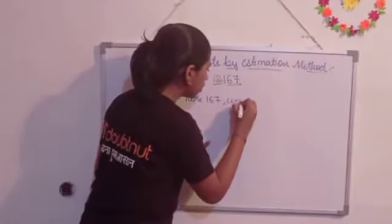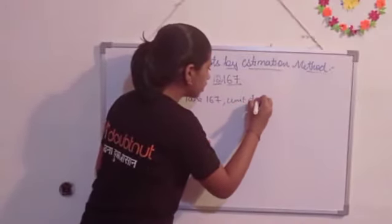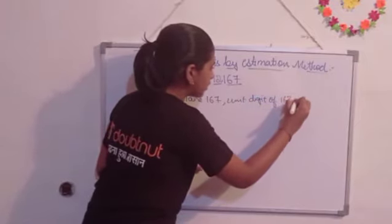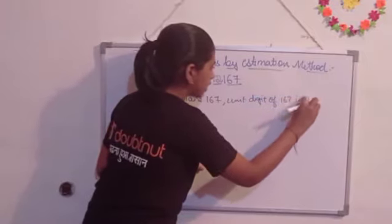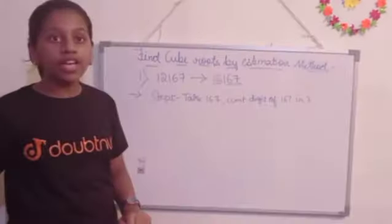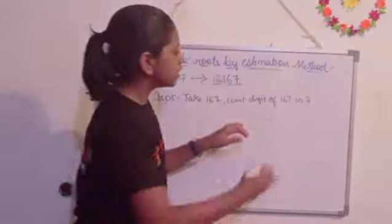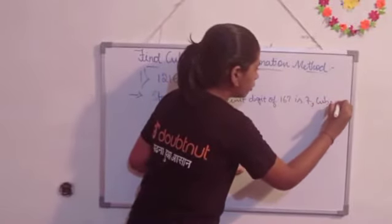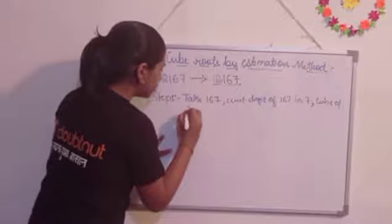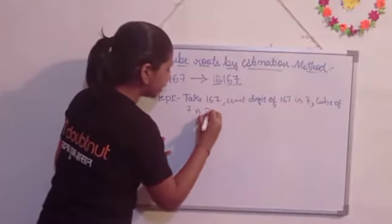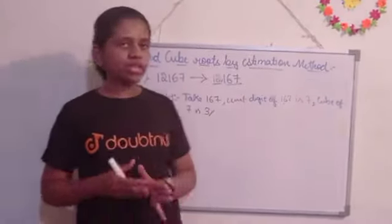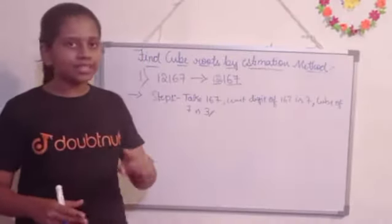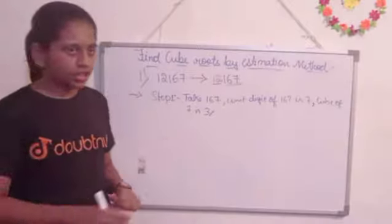The unit digit of 167 is 7, and we are going to find the corresponding cube root digit. When we cube 7 - 7 times 7 times 7 - we get 343. The unit digit of 343 is 3, so the answer's unit digit is 3. Got it?